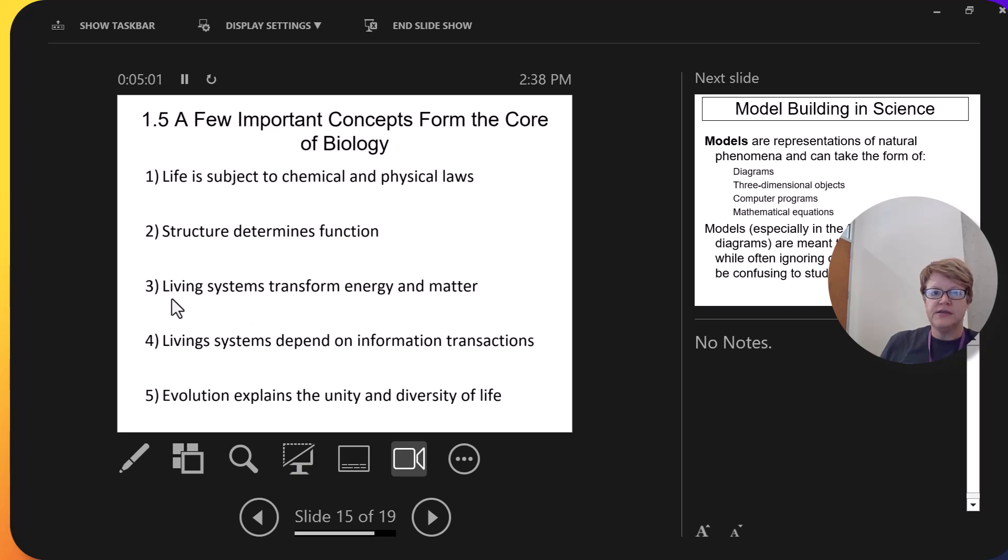Number three is that living systems transform energy and matter. I mentioned this in the first section of this lecture. Energy flows through an organism and matter is exchanged between an organism and its environment. You take in food, you release waste. That's what we call it. You take in energy, you release energy. So, there has to be an exchange, a transformation of energy between the organism and its environment, and there has to be an exchange or transformation of matter between an organism and its environment. And if either one of those is not happening, then that can be a definition of death.